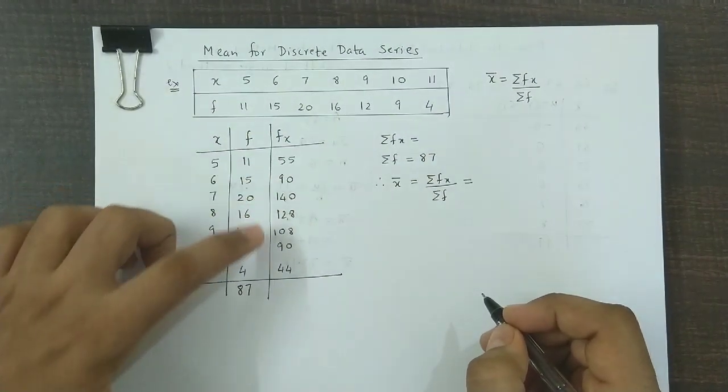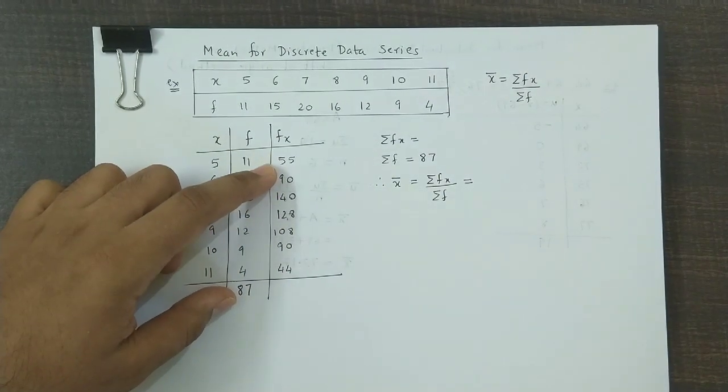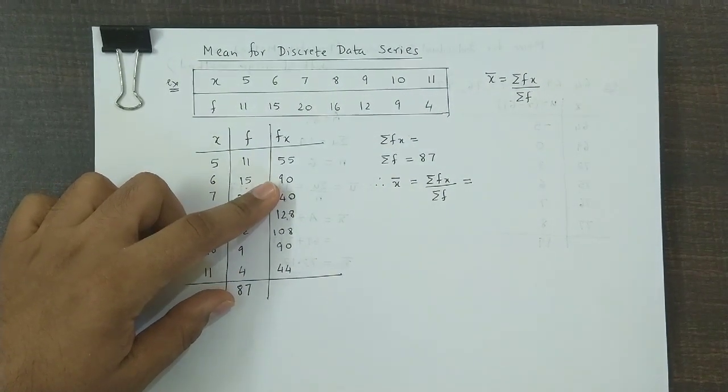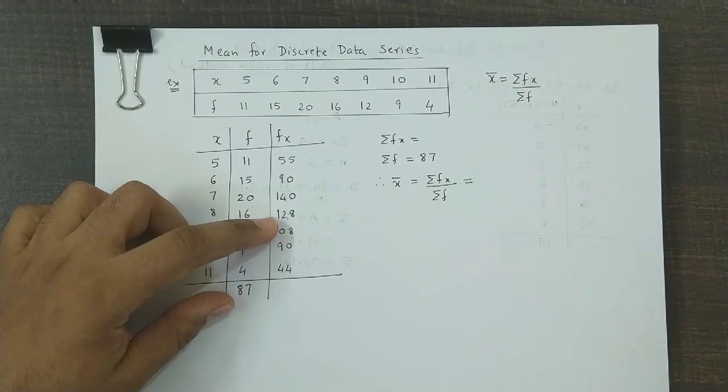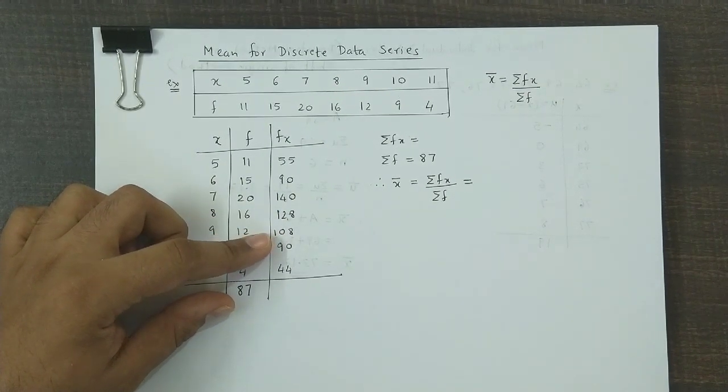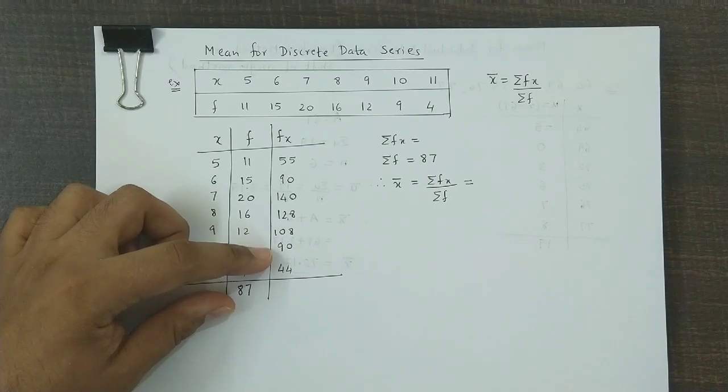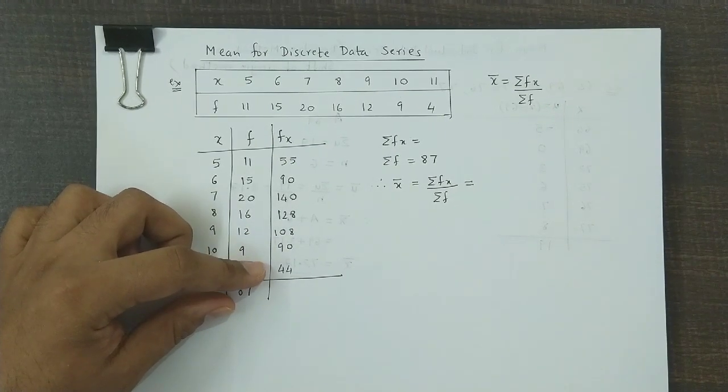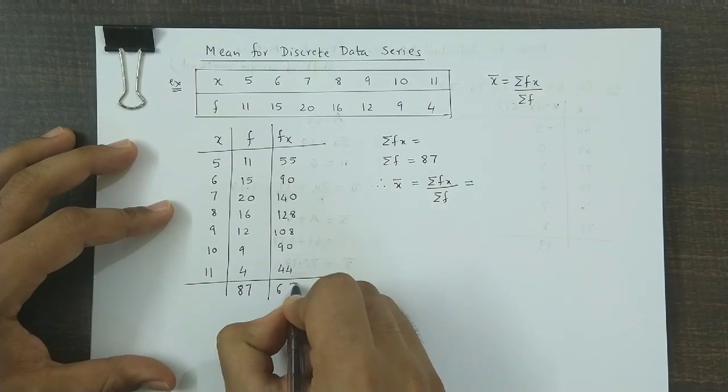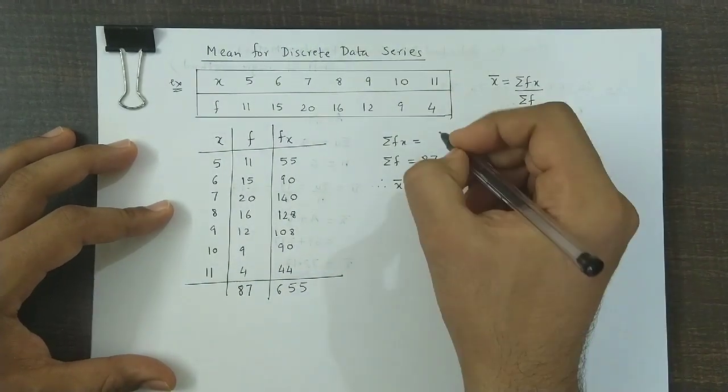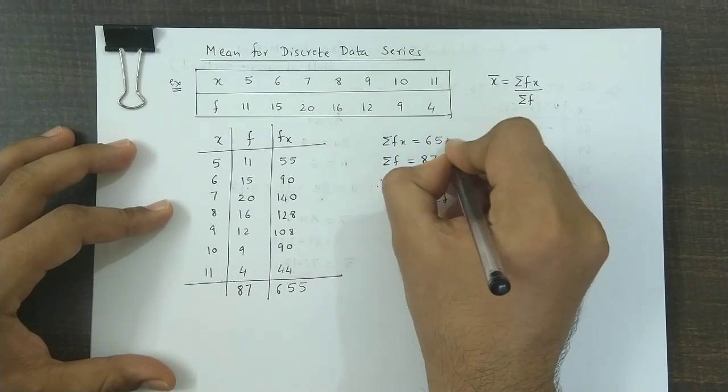Next is summation of fx. Let us add these values: 55 plus 90 plus 140 plus 128 plus 108 plus 90 plus 44. This total is 655. Summation of fx is 655.